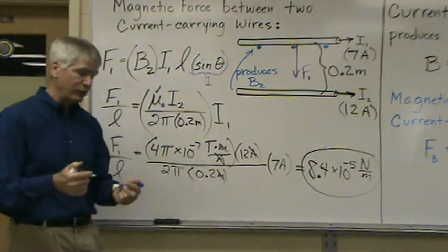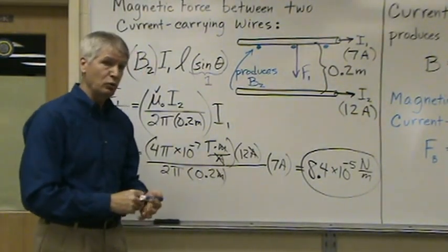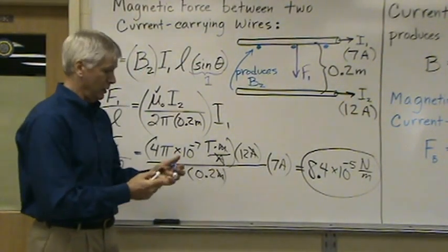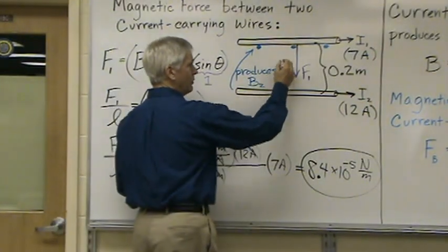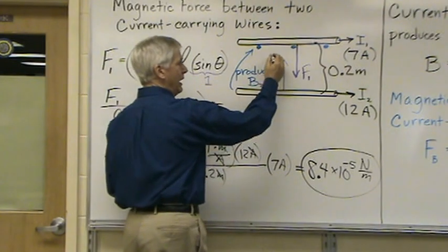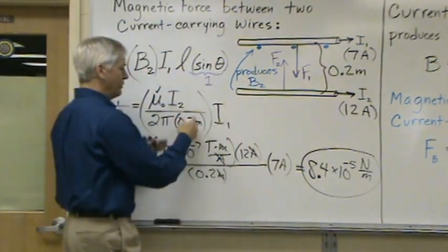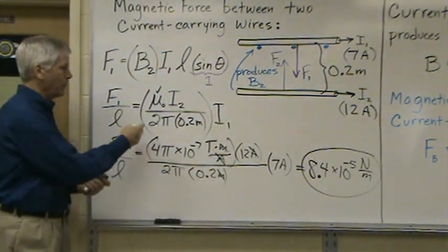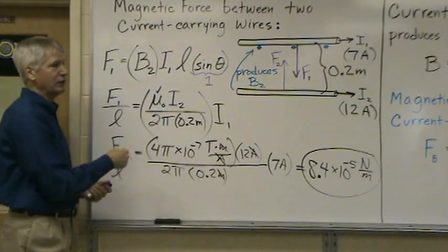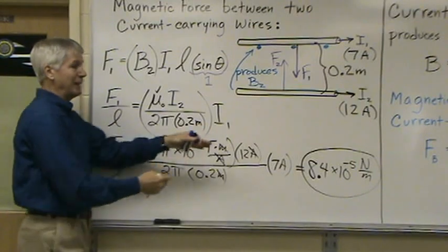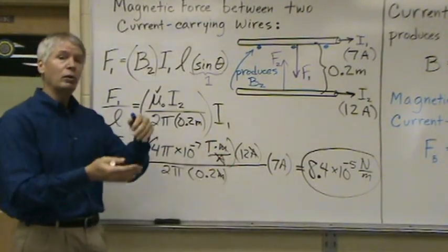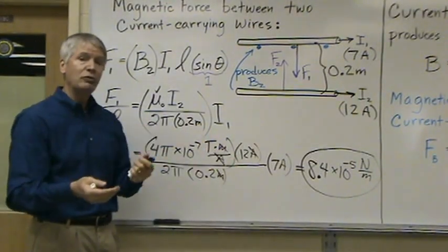Now if you went back to figure out the force on wire 2 from wire 1, it would be in this direction. There's an attraction going on. And that force will have the same numbers applied to it to calculate the value. And you'll just be switching I1 and I2 and you'll end up getting the same value.